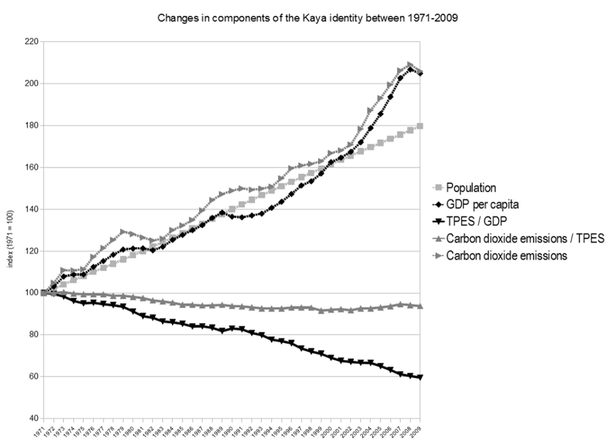The different SRES scenarios contain widely differing assumptions of future social and economic changes. For example, one SRES emissions scenario projects a future population level of 15 billion people in the year 2100, while another projects a lower population level of 7 billion people. The SRES scenarios were not assigned probabilities by the IPCC, but some authors have argued that particular SRES scenarios are more likely to occur than others.